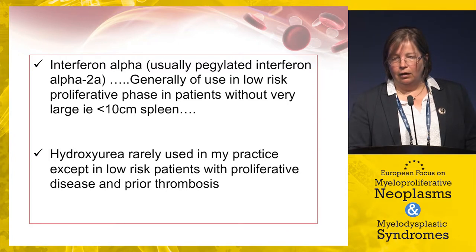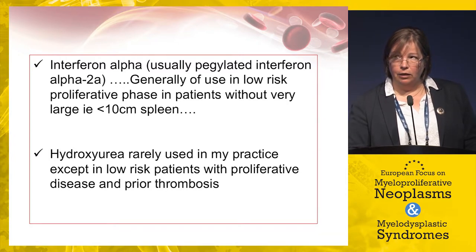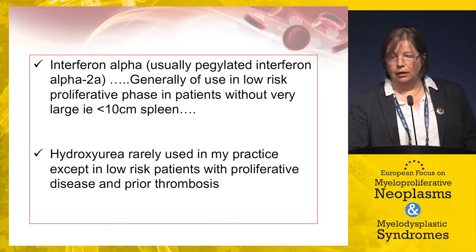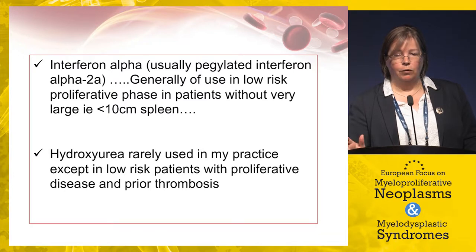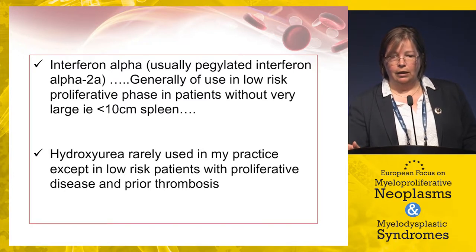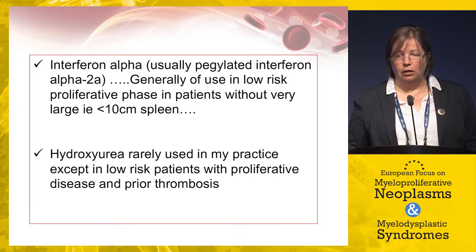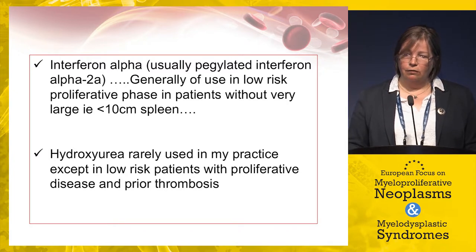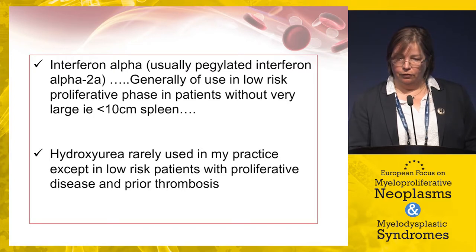Concerning interferon alpha, we usually use pegylated interferon alpha-2a, and are interested in novel pegylated interferon formulations. We use these agents in low-risk patients with proliferative phase disease and without very large splenomegaly — i.e., less than 10 centimetres — based on work from the French group. Hydroxyurea is now very rarely used in my practice, except in low-risk patients with very proliferative disease and a prior history of thrombosis.